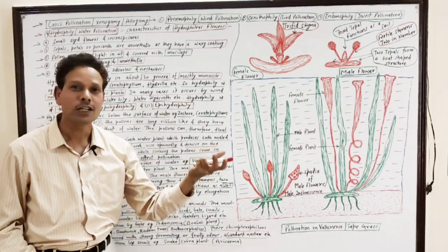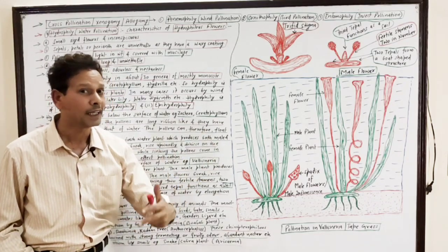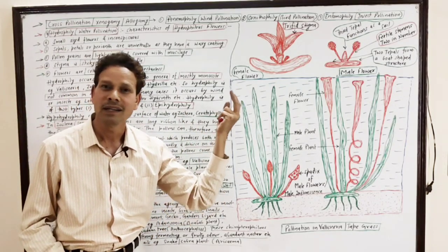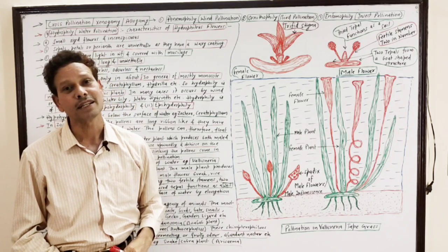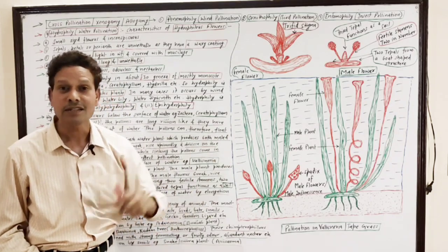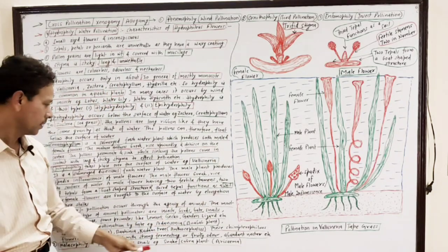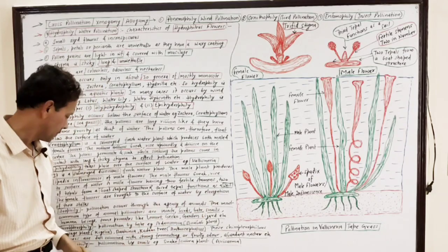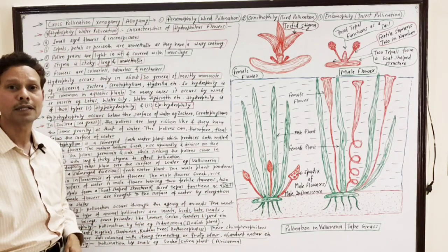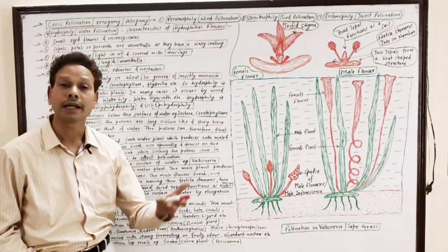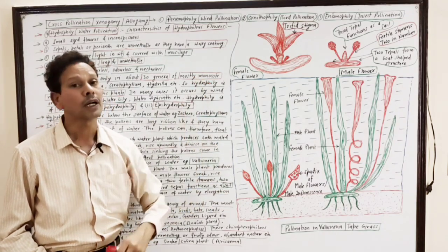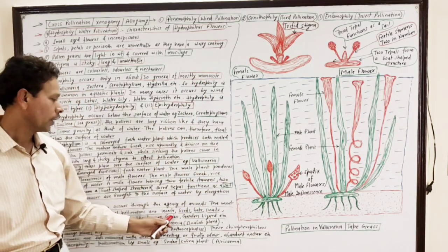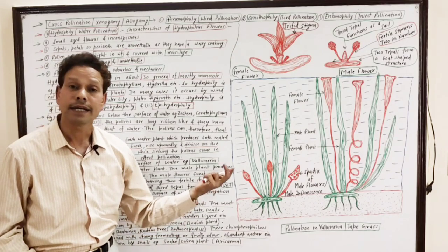As the name indicates, zoophily is the pollination that occurs by animal agencies like insects, birds, bats, snails, human beings, some primates like lemurs, some lizards, gecko, garden lizards, etc.